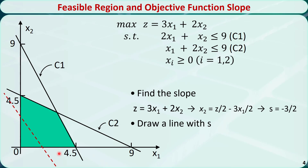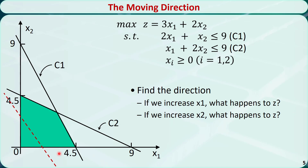Now let's find which direction to move the line. If we increase x1, what happens to z? It will increase. If we increase x2, what happens to z? It will also increase. So in general, we should move towards the top right corner.